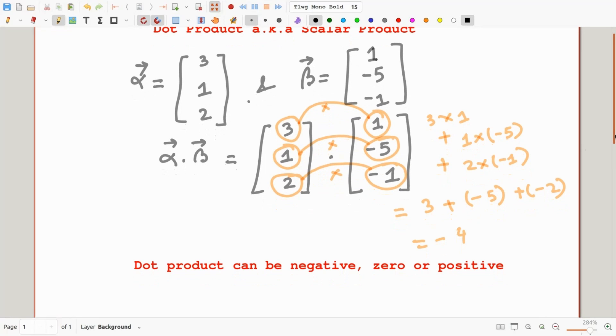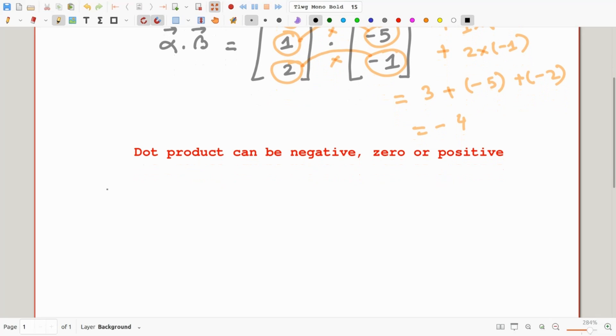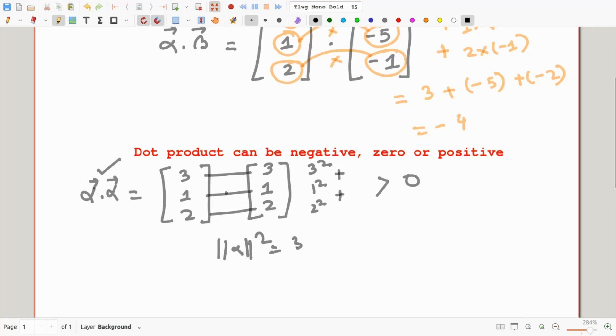Let us see what happens if we do the dot product of a vector with itself. Let us do alpha dotted with itself. That is going to be alpha dot alpha equals 3, 1, 2 dotted with 3, 1, 2. Because we are multiplying each component by itself, that is 3 times 3, which is 3 square, 1 times 1, which is 1 square, 2 times 2, which is 2 square. We are adding squares and square is always positive. Since we are summing up positive numbers, therefore, whenever we are taking a dot product of a vector with itself, the final outcome will always be a positive number. In this case, we have 3 square plus 1 square plus 2 square equals 9 plus 1 plus 4 is 14.